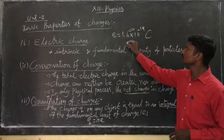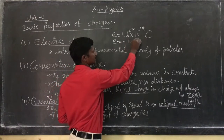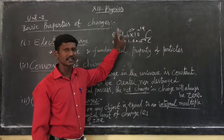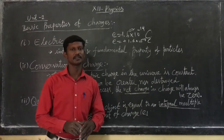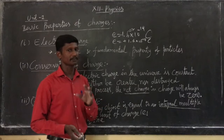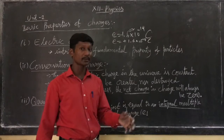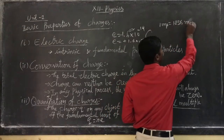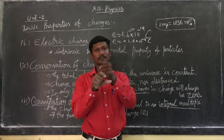The electron has a negative charge and the proton has a positive charge. For the proton, e is plus 1.6 × 10⁻¹⁹ C, and for the electron it is minus. So proton has a positive charge and electron has a negative charge. The electron and proton have equal and opposite charge. However, their masses are different — the proton has a very high mass.